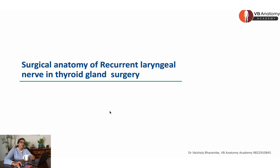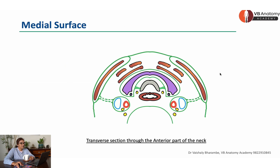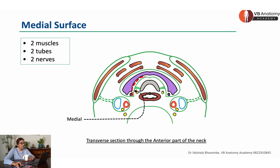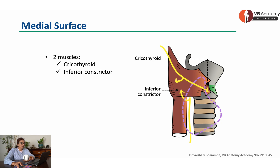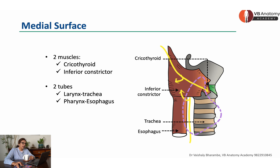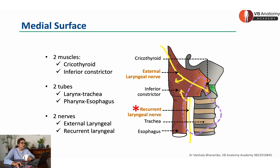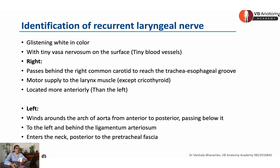Surgical anatomy of the recurrent laryngeal nerve. This is the medial surface of the thyroid gland. The thyroid gland is related to two muscles — cricothyroid and inferior constrictor — two tubes: larynx, trachea and esophagus, and two nerves: external laryngeal nerve and recurrent laryngeal nerve. How will you identify the recurrent laryngeal nerve? Remember that it looks glistening white in color and has a blood vessel network on it, making it easy to identify.